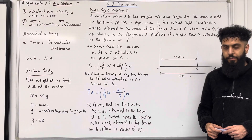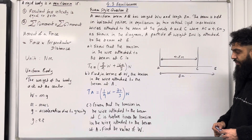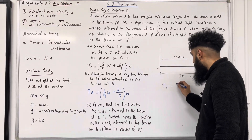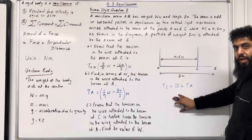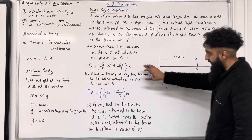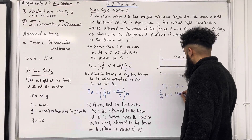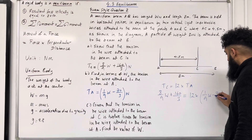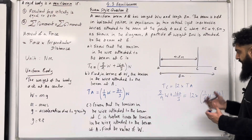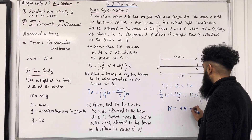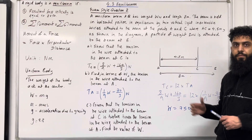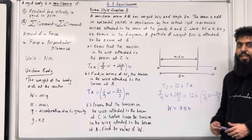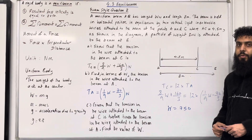Moving on to part C: given that the tension in the wire at C is 12 times the tension in the wire at A, find the value of W. We have TC equals 12 times TA. Substituting both expressions in terms of W and rearranging to make W the subject gives W equals 750. This completes exam style question two and teaching video 4.3 Equilibrium. If you found this useful, please subscribe, leave a like and a comment, and turn on notifications so you receive alerts every time I post a new teaching video.